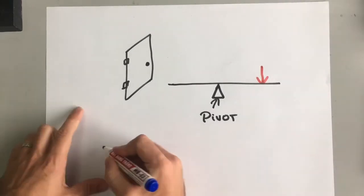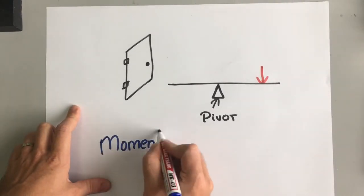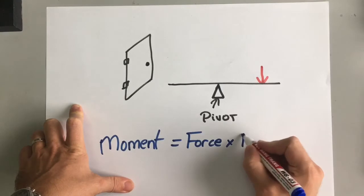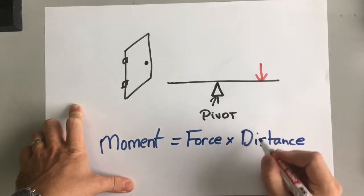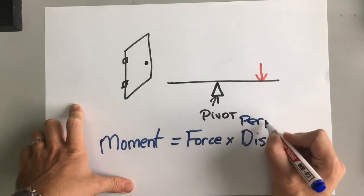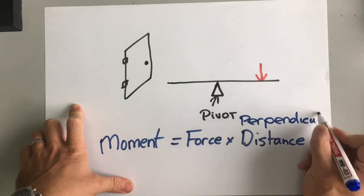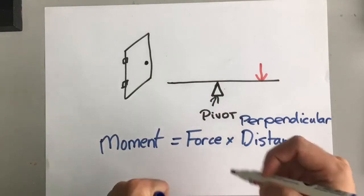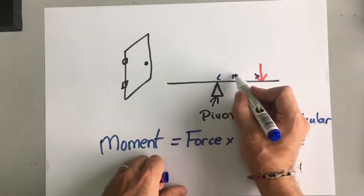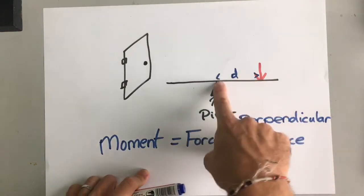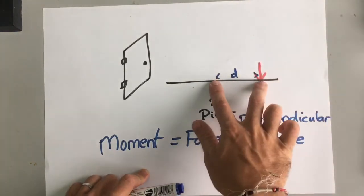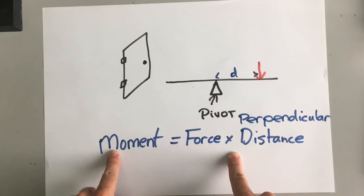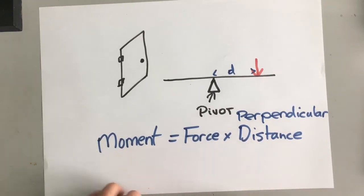A moment is a turning force, and a moment is the force times the distance from the pivot. That has to be the perpendicular distance. So the force is acting at 90 degrees to the pivot — that's how you make the distance measurement. As long as your force is acting at 90 degrees to the pivot, you have a moment. A moment can be calculated with force times distance.